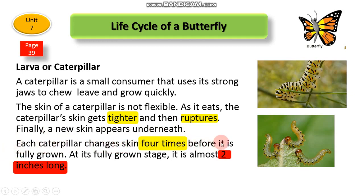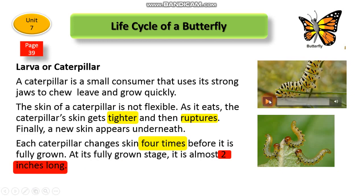The caterpillar sheds its skin four times before it is fully grown. At that stage it is almost two inches long.